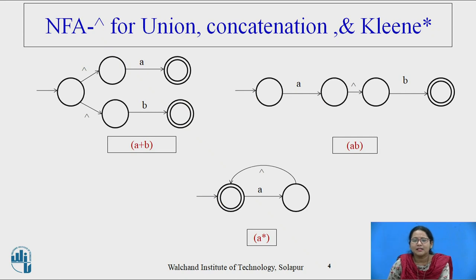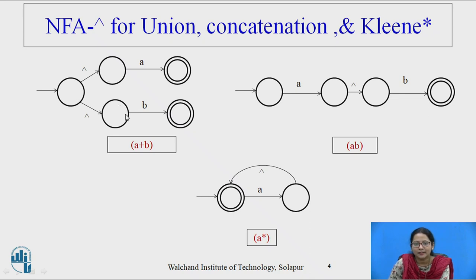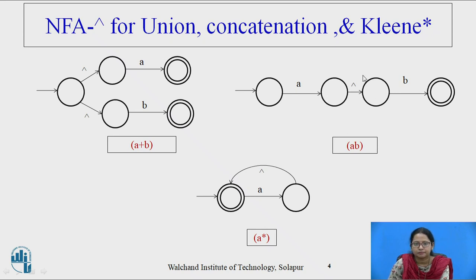We will see some examples so the picture will be clear. This first diagram is for A+B — a machine for A+B NFA with null transition. A new state is added as the initial state, which is connected with null transitions to the original initial states of machine A and machine B respectively. All accepting states of machines A and B work as accepting states of our NFA with null transition. This next diagram is for A,B concatenation — machine A's accepting state is connected to the initial state of machine B with a null transition.